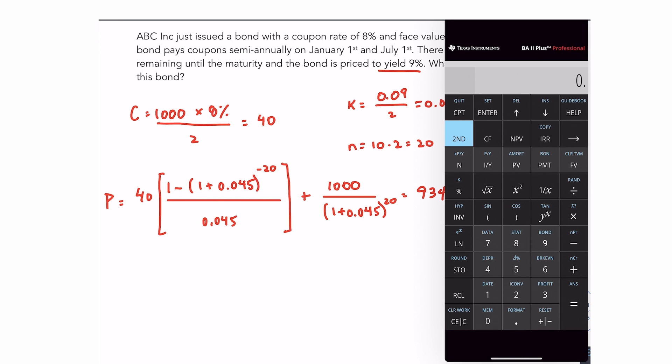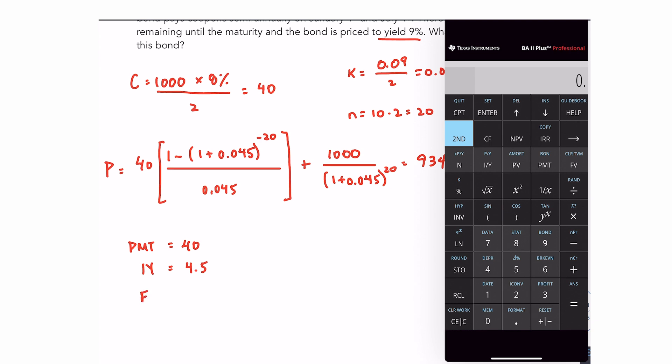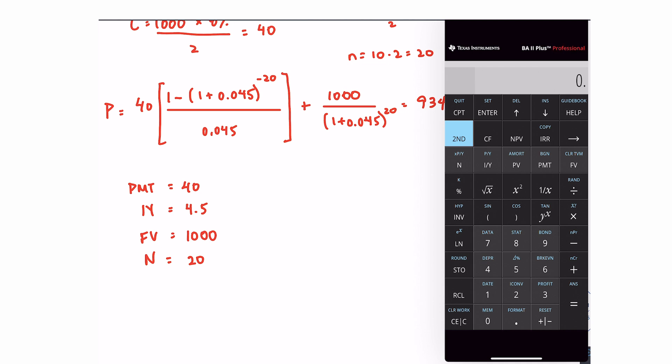Now, if you wanted to do this on a financial calculator, your coupon payment would become the payment. So set PMT to 40. The IY is 4.5. That is the same rate as if you were using the formula. Future value, 1000. That is the face value. N is 20. So it's the same values as we used above, just plugged into your financial calculator.